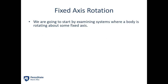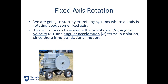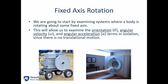So we're going to start with fixed axis rotation. This is where the body is rotating about some fixed axis, and the axis is not moving. This will allow us to examine the orientation, angular velocity, and acceleration terms in isolation, since there's no translational motion to worry about. Examples of this are also pretty common. The flywheel on this antique motor is going to be rotating about that central axis. Also, something like a CT scan — there's a gantry inside of that structure, and it's going to be rotating very fast about a fixed axis. There's no physical axis in the center, but there is a center of rotation. Both of these count as fixed axis rotation, where we can deal with these terms without worrying about translation.